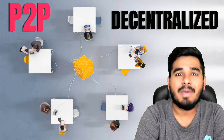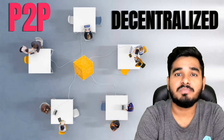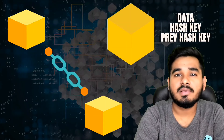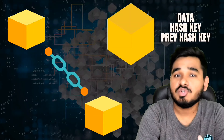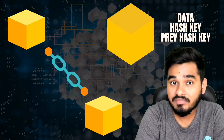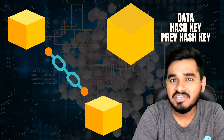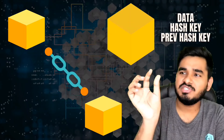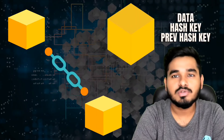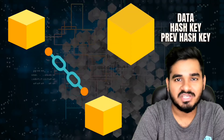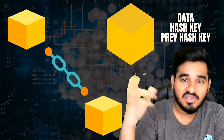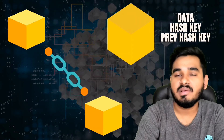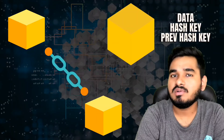You might ask: if I'm communicating directly with my peer, who will manage my data? Here blockchain comes into the picture. Your data will be stored in a block. A block is a data storage device that stores your data along with a public key, also called a hash key. The hash key is like a fingerprint — if the data is altered, the entire hash changes.